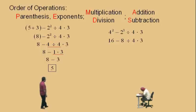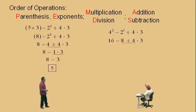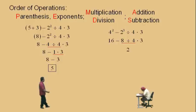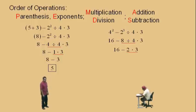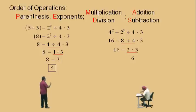Now, here we go, Charlie. Do we have any divisions or multiplications? Yes, we do. Now, which one comes first? Division. The division. So we have to do that first. We have 16 subtract 8 divided by 4 times 3. We've got to do the 8 divided by 4 first. And what's 8 divided by 4? 2. Bring down your work: 16 subtract 2 times 3. Now, what do we do first? We've got a subtraction and a multiplication — you have to do the multiplication first. It's just 2 times 3. What's 2 times 3? 6. And we have 16 subtract 6, which is 10.